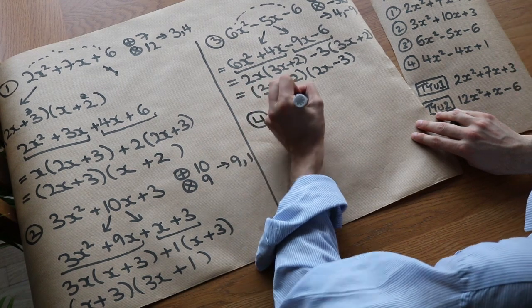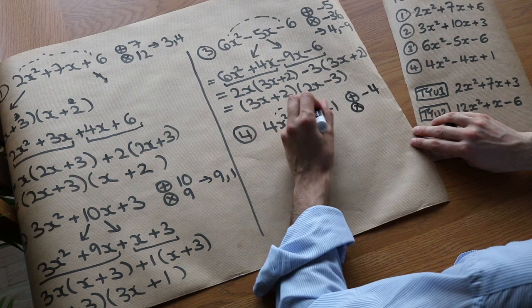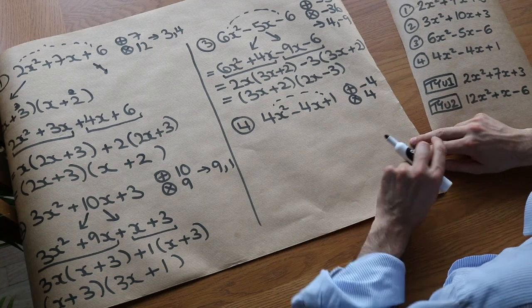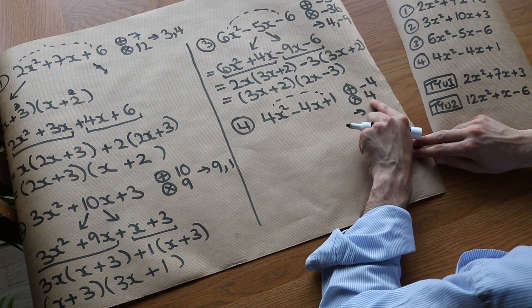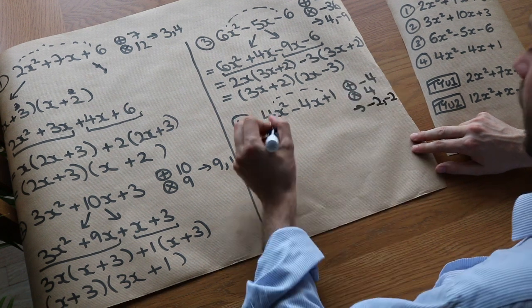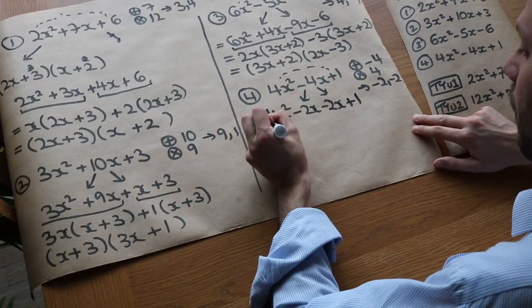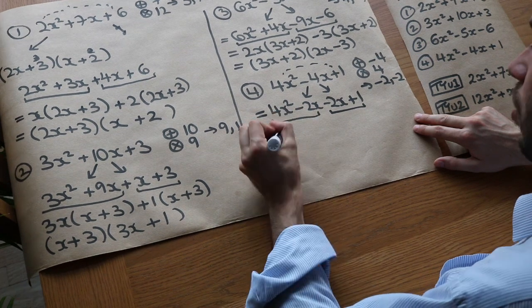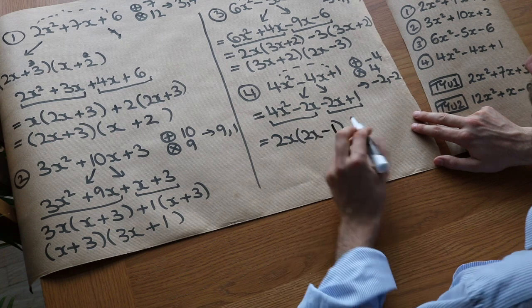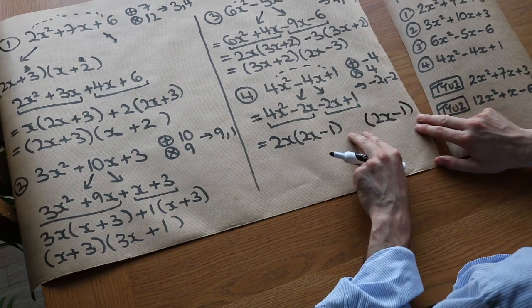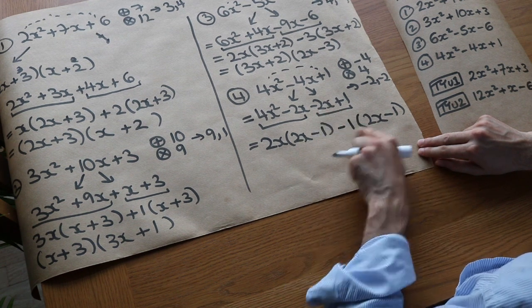Last example: 4X squared minus 4X plus 1. We need two numbers which add to give minus 4 and multiply to give the first times the last: 4 times 1 is 4. If they multiply to give a positive number, they're either both positive or both negative — they can't both be positive as they won't add to give minus 4. So they must both be negative: minus 2 and minus 2. We split into 4X squared minus 2X minus 2X plus 1, and factorise each half. They have a common factor of 2X: 2X times 2X minus 1. Then duplicate the bracket, and what times 2X minus 1 gives minus 2X plus 1? It's minus 1, since minus 1 times 2X is minus 2X and minus 1 times minus 1 is plus 1.